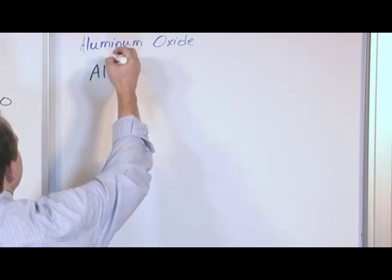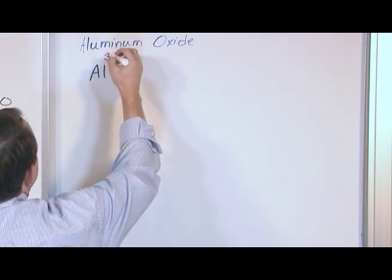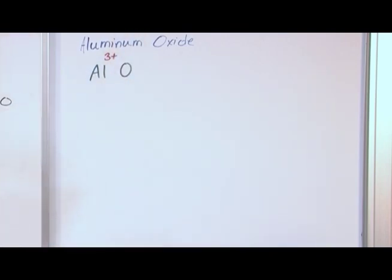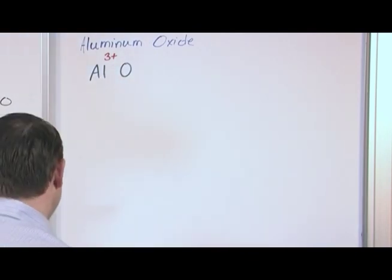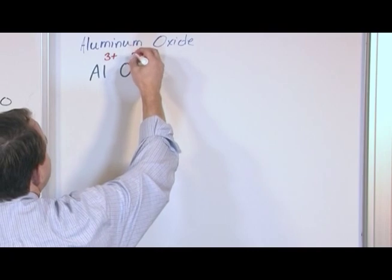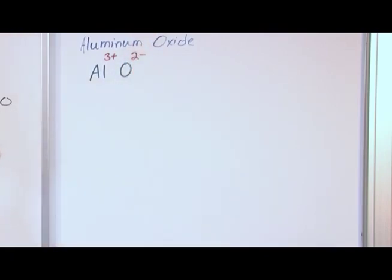Aluminum always wants to take a +3 charge. That's something you'll probably remember. It should be listed in your book, but you can't get this by counting columns because it's in the center of the table. Oxygen wants to take a -2 charge.